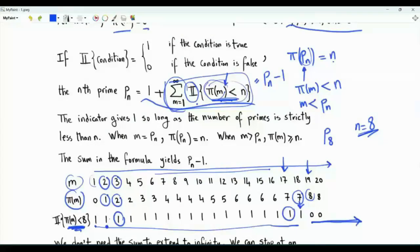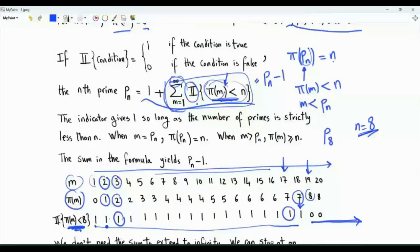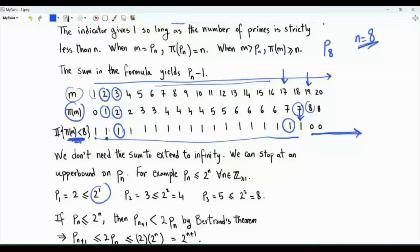Do we have to employ an infinite sum? Note that we need to sum all the way to the nth prime minus 1. It's okay to extend this summation to an upper limit that is strictly greater than p_n but is still a finite number. For instance, we can sum all the way to 2 to the power n. 2^1 is 2, the first prime is 2. The second prime is 3, which is less than or equal to 2^2. The third prime is 5, which is less than or equal to 2^3 = 8. Generally, p_n is less than or equal to 2^n, and this can be established via induction.